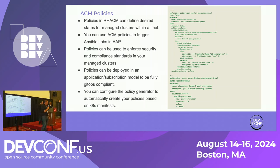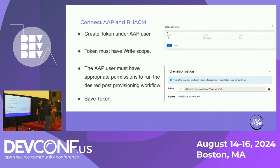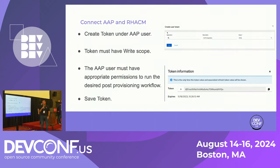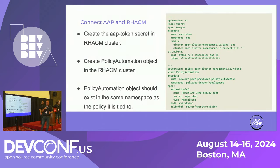Now that we know about ACM policies, let's see how we link AAP and ACM together — and it's way simpler than you would imagine. All you need is an AAP token. Go to any user in AAP who has access to the workflow you want to trigger, go into the user section, click tokens, grab the token. Store it somewhere secure, because once you leave that page the token is gone. On the ACM side, all you need is a Kubernetes secret created on the ACM hub cluster. That secret contains just the URL to the AAP instance and the token you just grabbed.